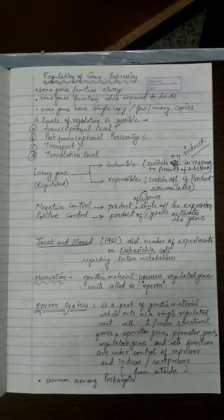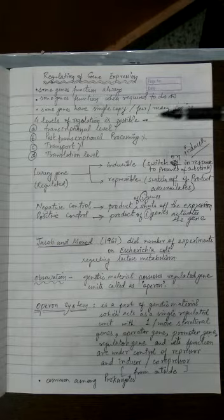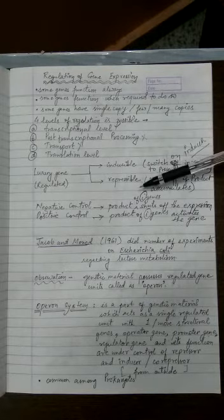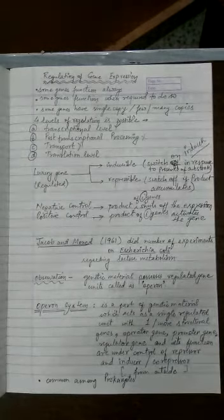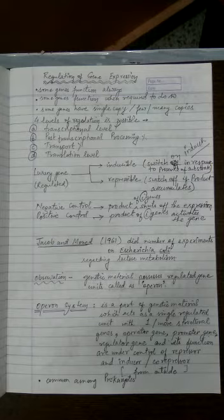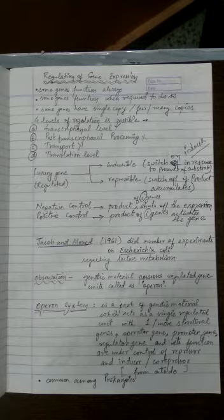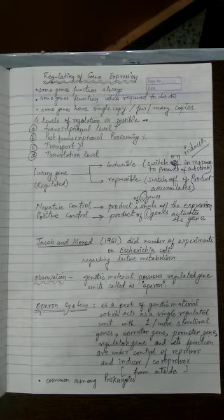There are two methods of control over gene expression: negative control and positive control. Both types of controls will be present in inducible and repressible systems. In negative control, the product of the regulatory gene shuts off the expression. In positive control, the product of the regulatory gene activates the gene.